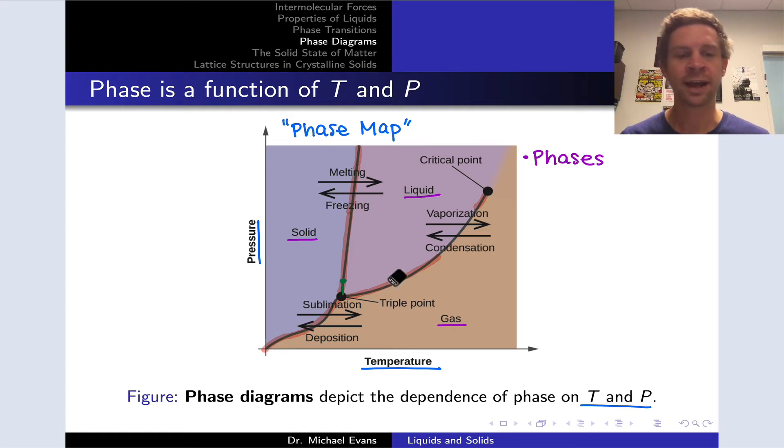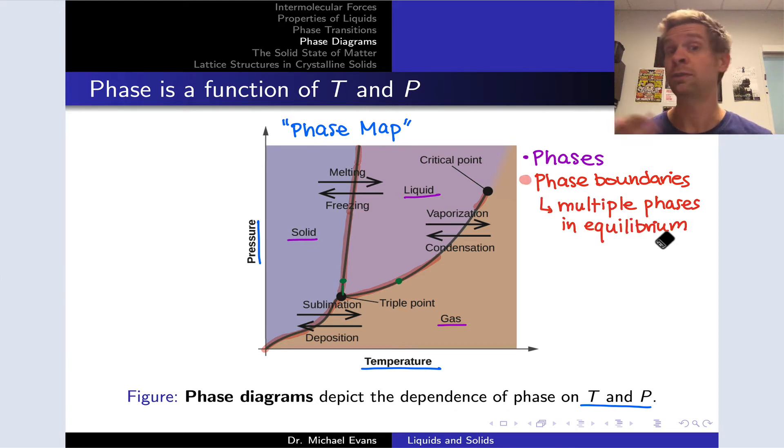We also have these border lines, highlighted in red, which we call phase boundaries—places where two phases, or even three phases, are in equilibrium. In other words, they have equal stabilities and are forming and disappearing at equal rates.